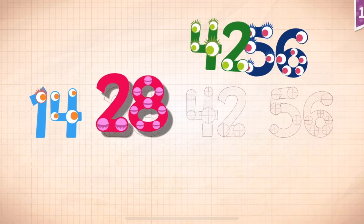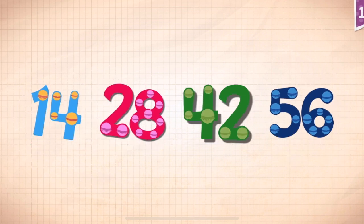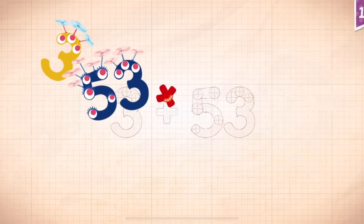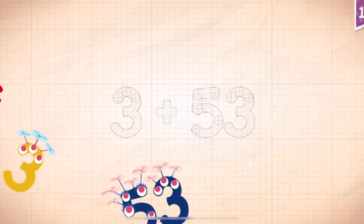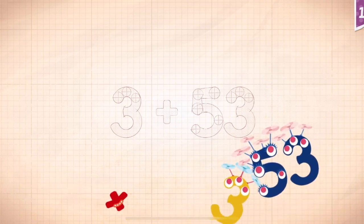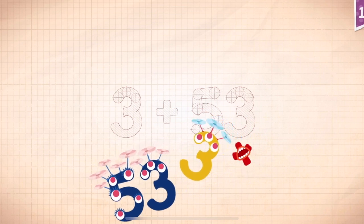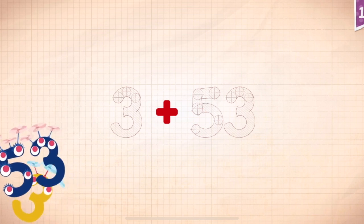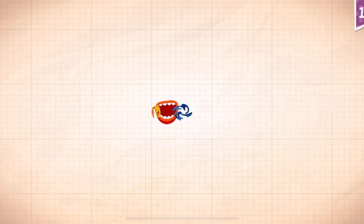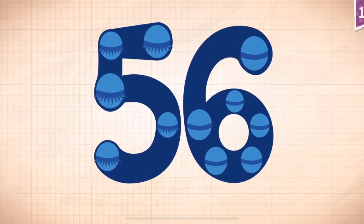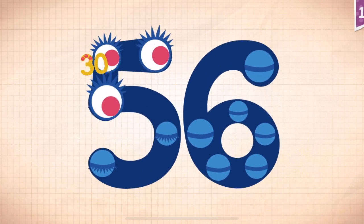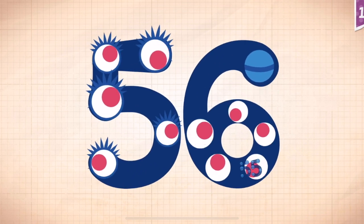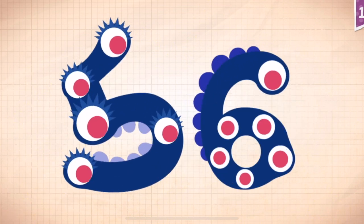Count by fourteens: 14, 28, 42, 56. Now 3 plus 53 equals 56. Touch the monster's eyes: 10, 20, 30, 40, 50, 51, 52, 53, 54, 55, 56.